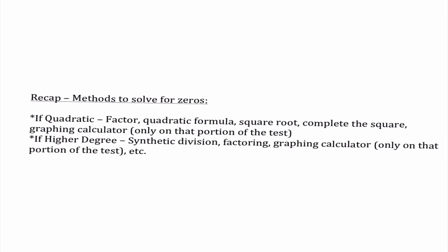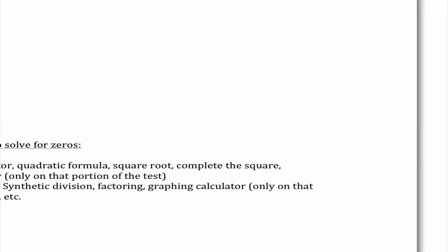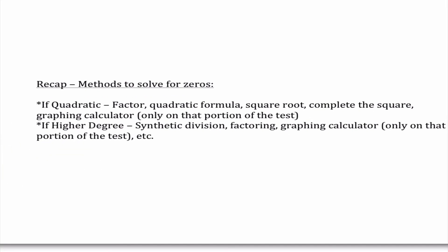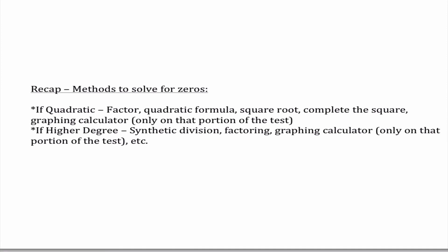A quick recap. Methods to solve for zeros: if it's quadratic — factor, quadratic formula, square root, complete the square, graphing calculator. If higher degree — synthetic division, factoring, graphing calculator. We've seen a bunch of different methods, and it's important that you know how to use all of them adequately. Remember, there are two parts of our test.